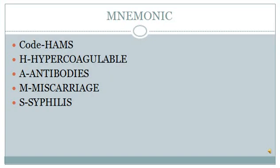Coming on to the summary of APS syndrome. You can use the mnemonic HAMS to remember it easily. H stands for hypercoagulable state. A stands for the various antibodies that you will see in this condition. M stands for miscarriage, which are spontaneous and recurrent. S stands for syphilis — remember, a patient who has APS syndrome gives a false positive test for syphilis. So this mnemonic HAMS might come in handy in your examination.